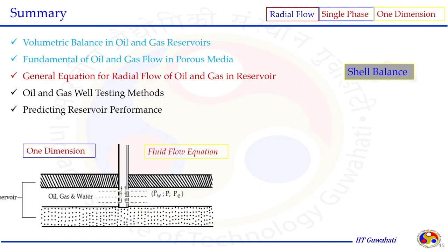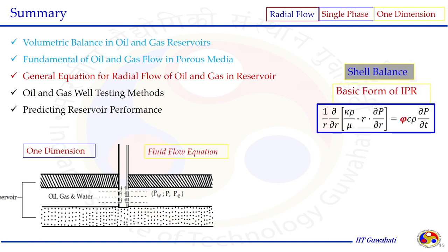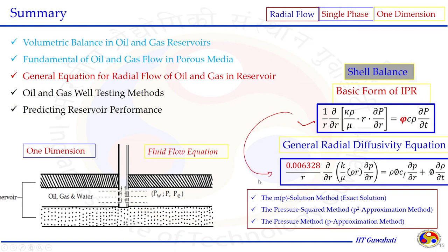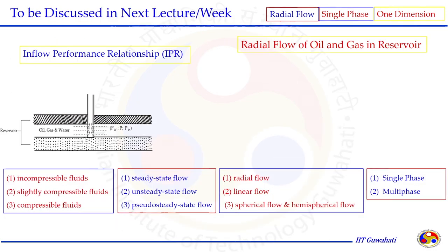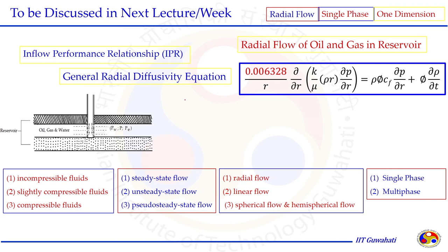In summary, in today's lecture we discussed the shell balance to start with the material balance, including the fluid flow equation and fluid properties, to get the basic form of IPR. The radial diffusivity equation was also established — a more general form that does not consider φ as constant. The basic IPR equation for compressible fluid was deduced in the form of m(P), P-squared, or P-approximation. We will see the expressions when dealing with compressible gas for different flow cases in the next lecture.